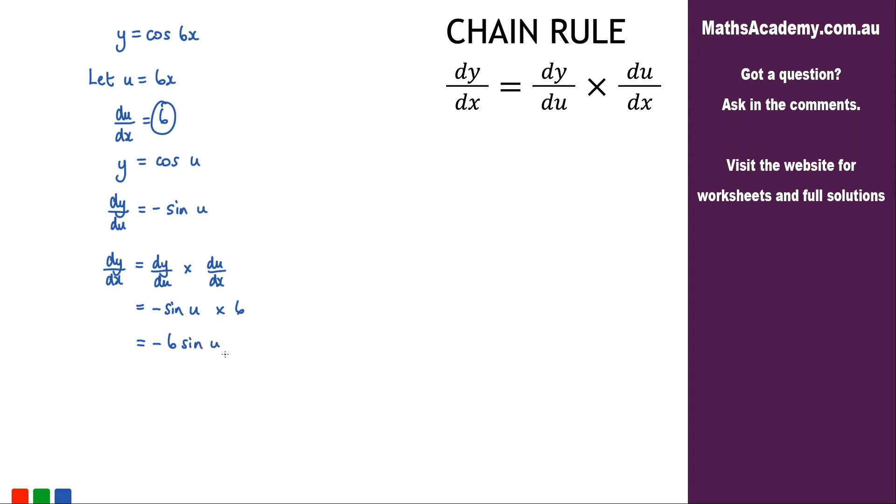And the last step is just to substitute back in for u. And we know that u is equal to 6x. So what we've got is dy by dx is equal to negative 6 sine of 6x.